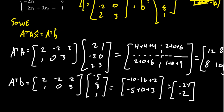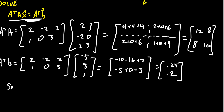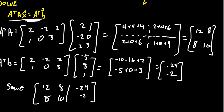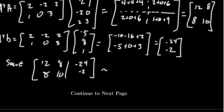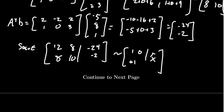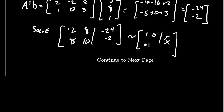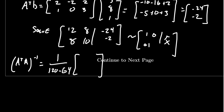So we need to solve the normal equations A transpose A times x̂ equals A transpose b, setting up the augmented matrix [12, 8 | -24; 8, 10 | -2]. We could row reduce this, but instead I want to demonstrate using the inverse of A transpose A. To find that inverse, we compute the determinant: 12 times 10 minus 8 times 8, which is 120 minus 64, giving us a determinant of 56.